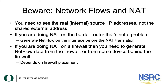Be aware of network flows and network address translation. If you're using NAT on your border router, you need to generate NetFlows on the interface before the NAT translation occurs — otherwise you won't know which private IP address actually generated the flow. If you're doing NAT on a firewall, it's more complex: you need NetFlow data either from the firewall itself or from a device behind it, depending on where the firewall is placed. If the firewall is before the router, you can generate flows on the router; if it's after, you need to generate flows from the firewall device itself.